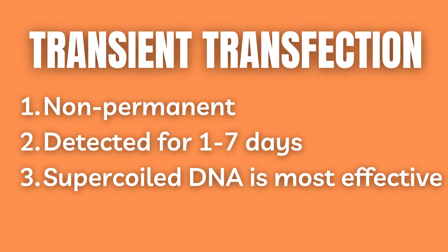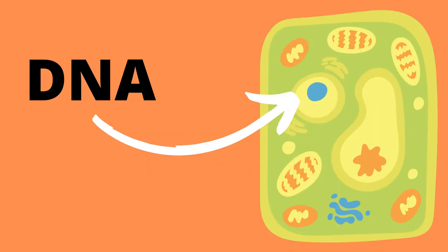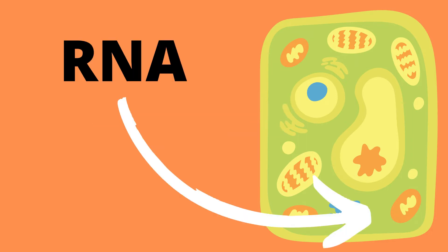Supercoiled DNA is most efficient, but siRNA, miRNA, mRNA, and even proteins can also be used. Transfected DNA is translocated into the nucleus for transcription, while the transfected RNA remains in the cytosol where it is expressed within minutes.